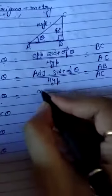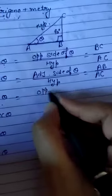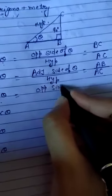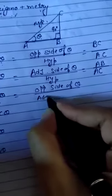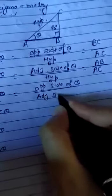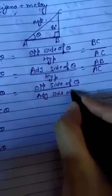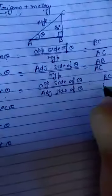Now, the next one is tangent theta. The value of tangent theta is opposite side of theta divided by adjacent side of theta. The opposite side of theta is BC and the adjacent side of theta is AB. So, tangent theta equals BC upon AB.